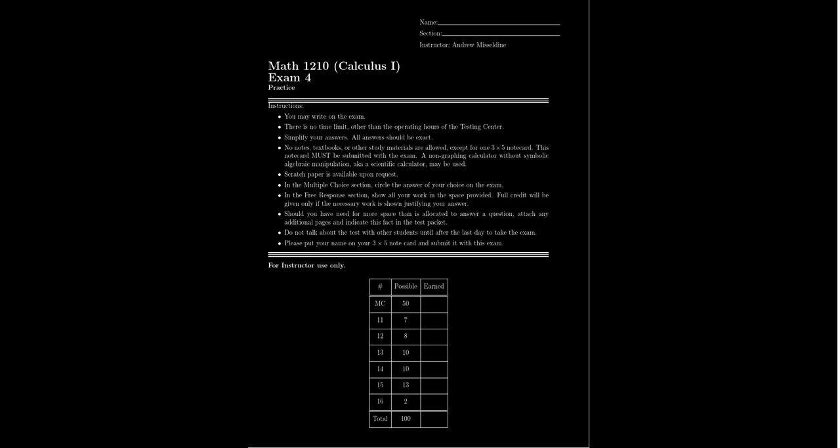Exam 4 is going to be covering lectures 31 through 41 in our lecture series. This will include the topics of extreme values — both absolute extrema and local extrema — the mean value theorem, the first and second derivative tests, L'Hôpital's rule, curve sketching using derivatives, solving optimization problems, approximating values using linearization and Newton's method, and an introductory topic on antiderivatives.